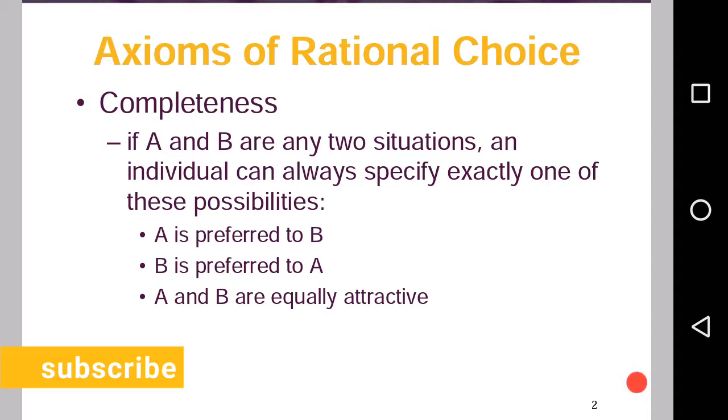So basically the idea of completeness is that the consumer is able to compare the goods. He knows what he wants, how much importance he gives to a particular commodity, so he is aware of his preferences. This is completeness.